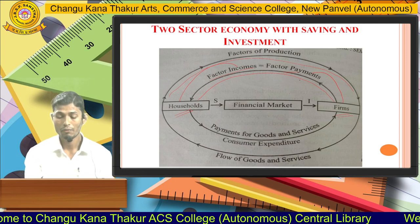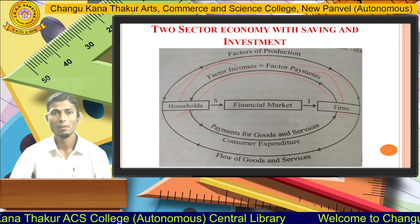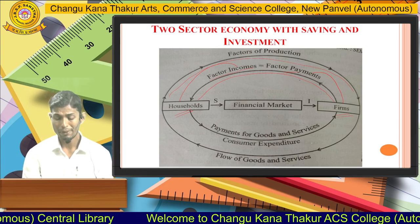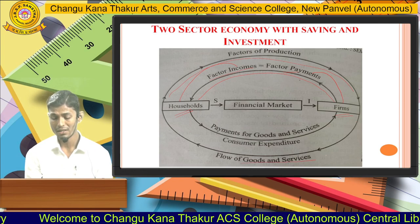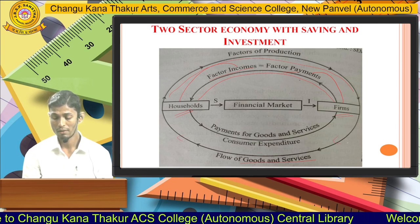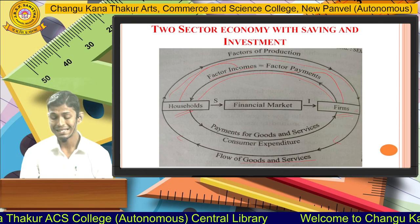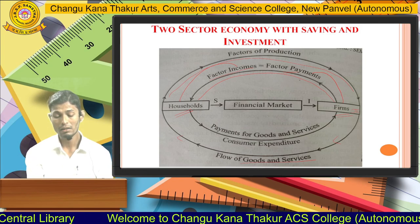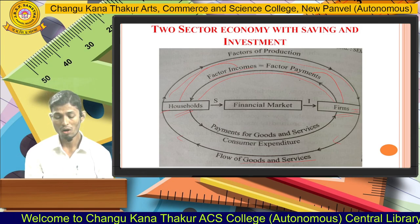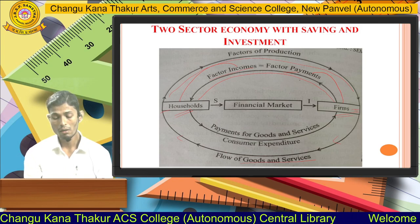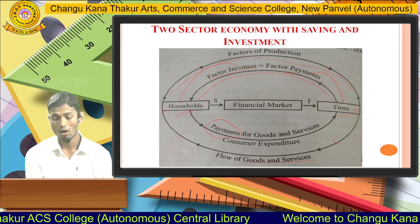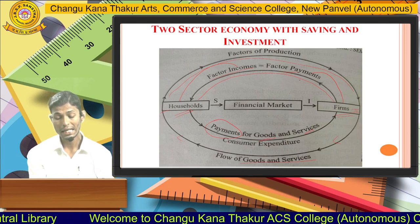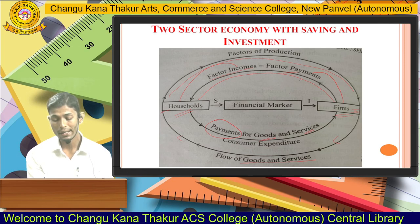Factor income consists of wages, rate of interest, and profits. In the lower part of the diagram you will see the flow of goods and services going towards the households, because after production firms sell goods and services to households — firms are the producing units and households are consumers. In return, households make payments for whatever goods and services they are purchasing.